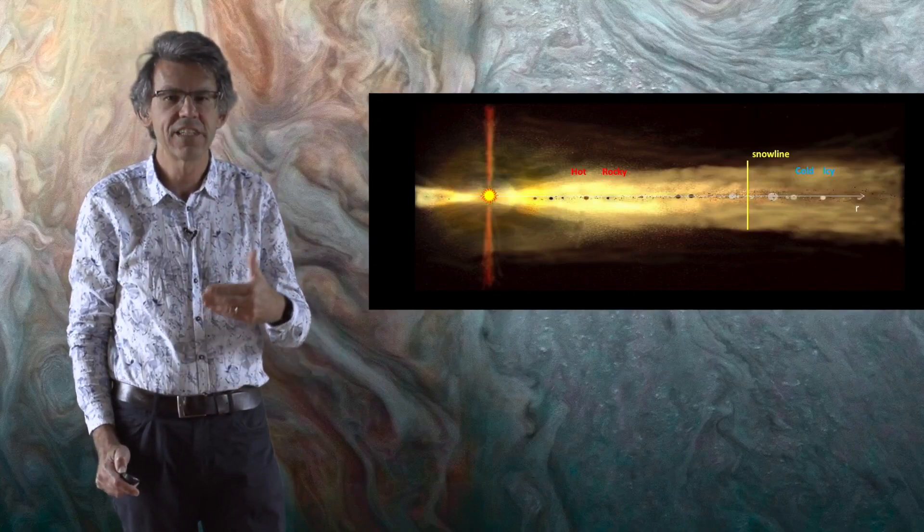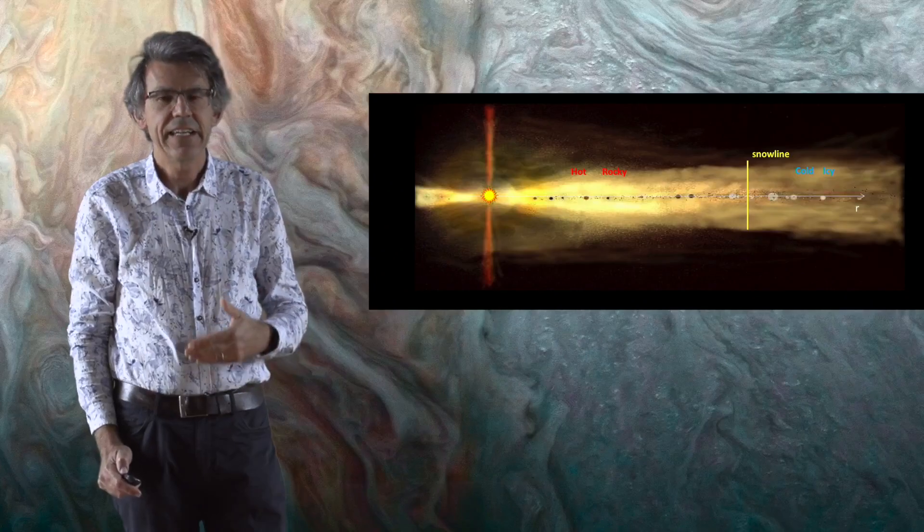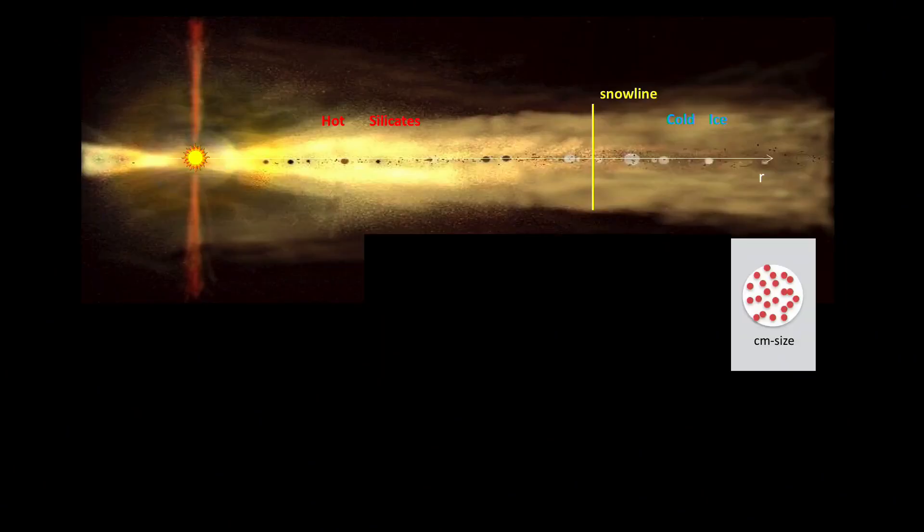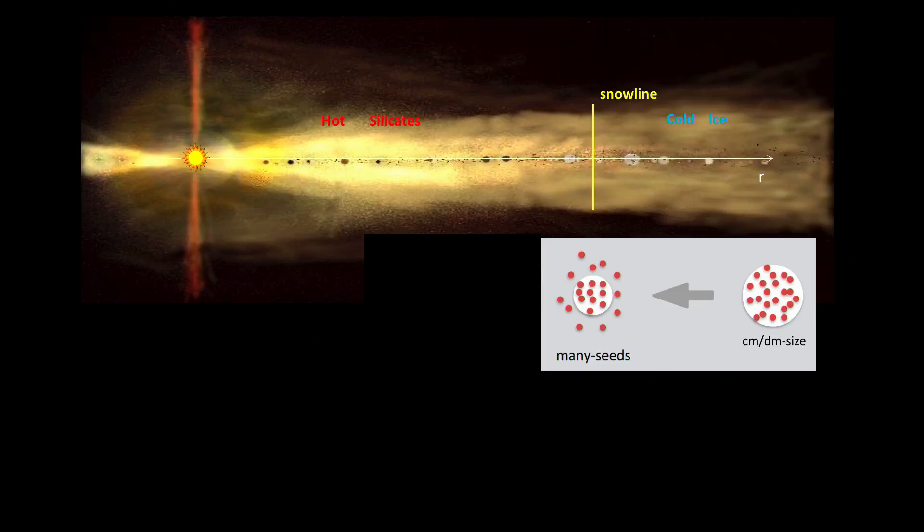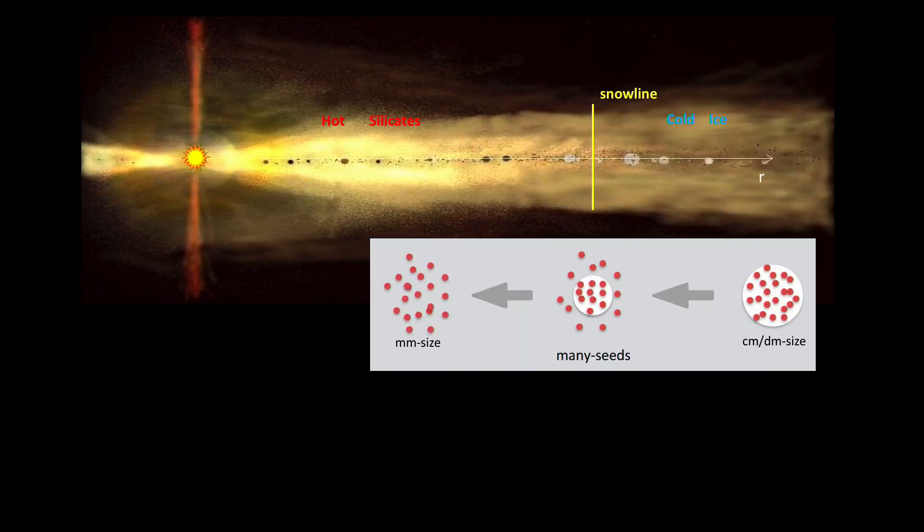In the outer part of the disk, pebbles are icy and they should be about centimeters in size. Their composition should be like that indicated in this scheme: this pebble should be made of rocky seeds of about a millimeter in size entrained into an icy matrix. These pebbles drift in the disk, and when they pass across the snow line, because the temperature becomes too high, the ice sublimates and therefore the rocky seeds are released. And in the inner disk, therefore, the only solid pebbles that can be used for planet formation are millimeter-size rocky pebbles.